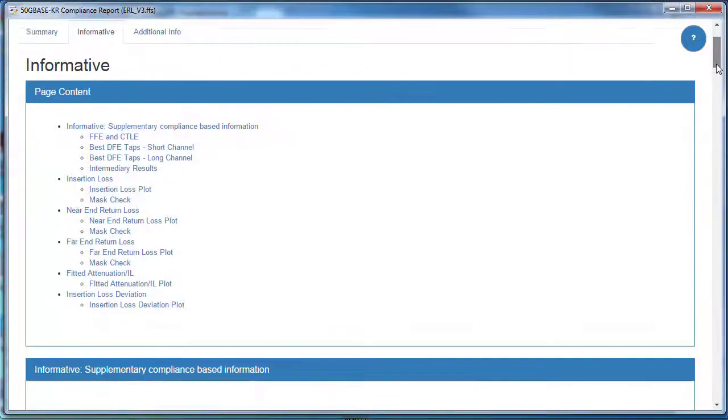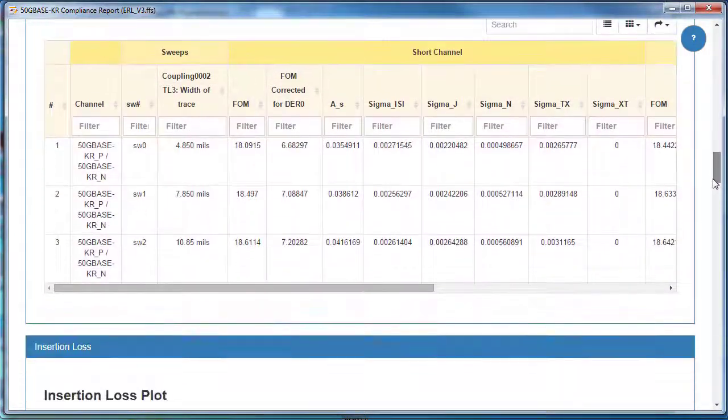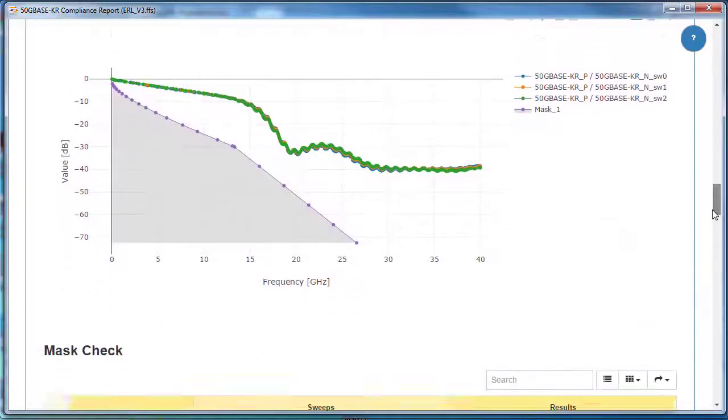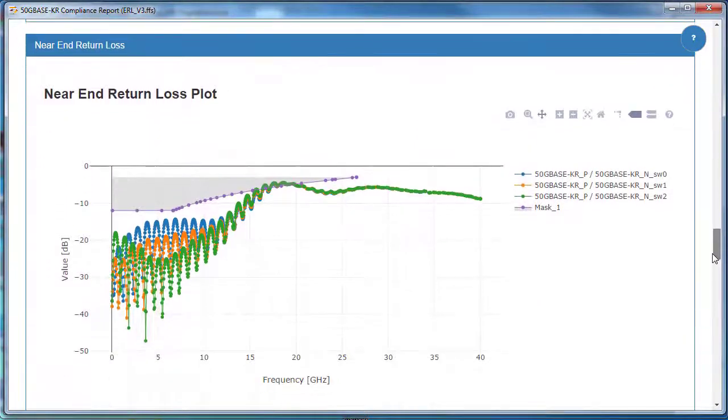The informative section of the report contains other information, including the optimized transmit and receive equalization settings, the insertion loss mask, and the traditional return loss mask, which was failing as we originally saw.